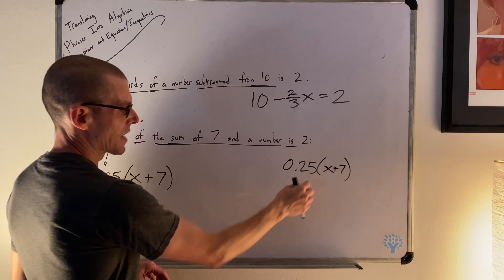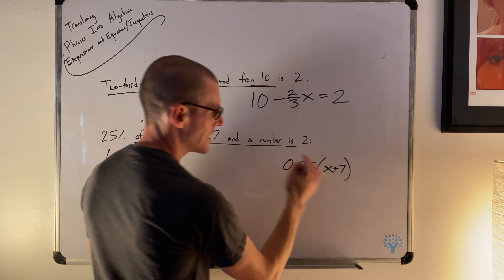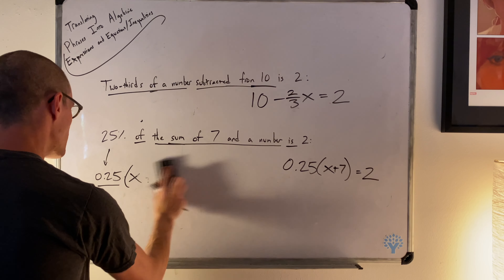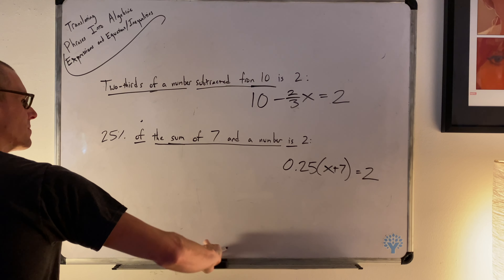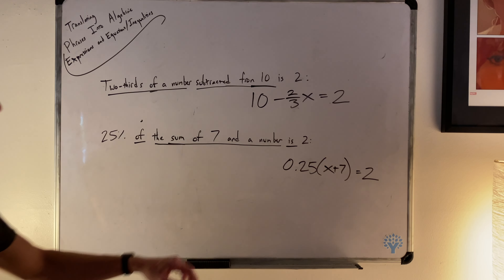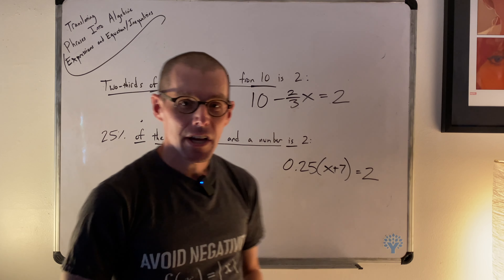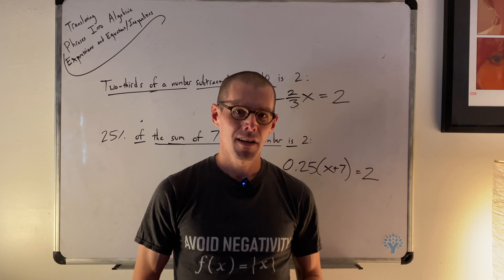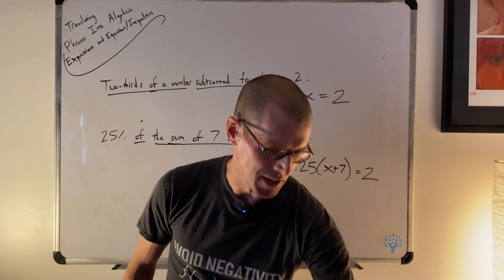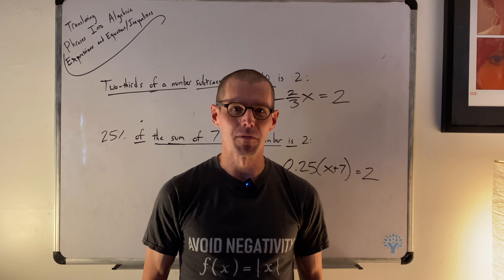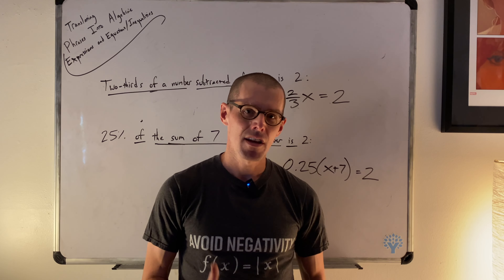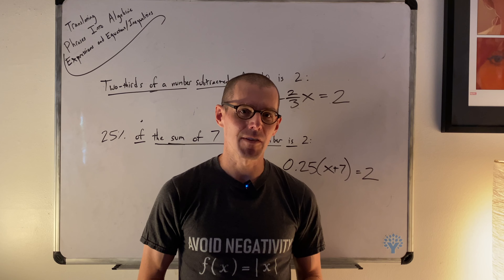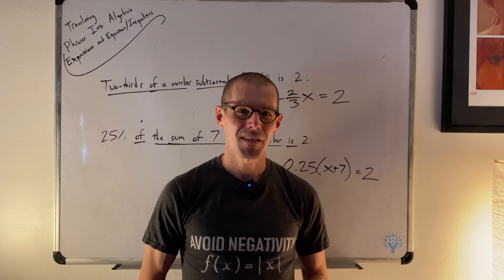0.25 times the sum of a number and 7 equals 2: 0.25(x + 7) = 2. Take your time with this material. There are lots of examples in the textbook, and come back to this video whenever you need to review.